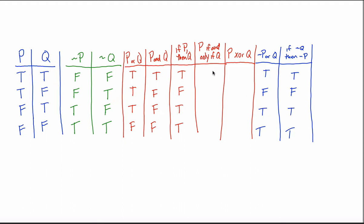This is the table I created last time, although there are two additional columns I added because they weren't included in the first video. We have the same setup: two premises P and Q. P can either be true or false, and Q can either be true or false, leaving us with four possibilities: true-true, true-false, false-true, and false-false. These don't have to be in this order, although this is the standard way things are asked.